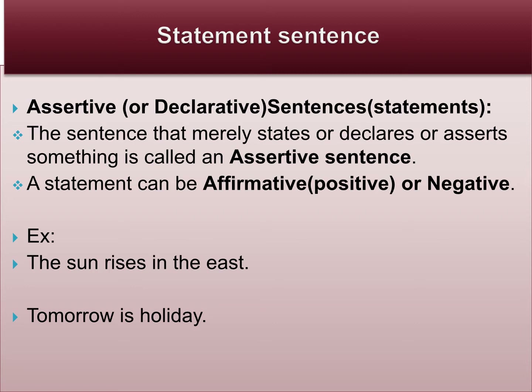The next sentence: 'Tomorrow is a holiday' — it is a message to someone. 'The boy is eating.' 'I am going to temple.' Whatever it is, the simple sentence conveys a message, it declares a message — it is called an assertive sentence. A statement can be affirmative, meaning a positive sentence, like 'I am going to temple.' Or it can be negative, like 'I can't eat,' 'I am not,' 'I didn't like to go' — that kind of sentence is called a negative sentence.